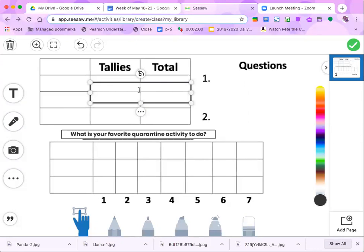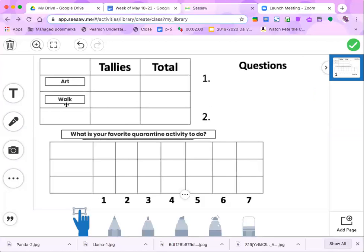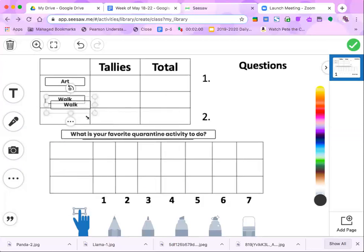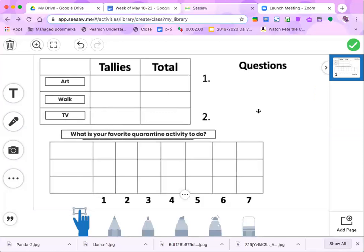And then I'm going to first start off with my tally area. So I'm going to think of three activities to do during quarantine. So crafts, arts and crafts. Actually I'm going to do art and make that a little bit smaller. Okay and then I'm going to duplicate that. My next activity that I like to do during quarantine that I'll ask about is taking a walk outside. And then finally I'm going to ask TV, TV time. Okay so those are my three things that I will ask people about. What is their favorite quarantine activity to do? Is it art, walking, or watching TV?